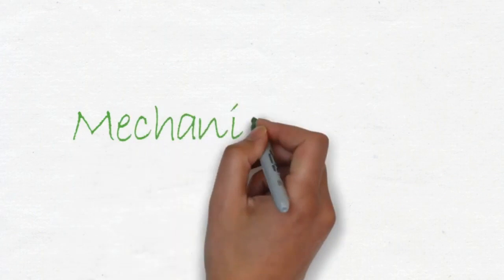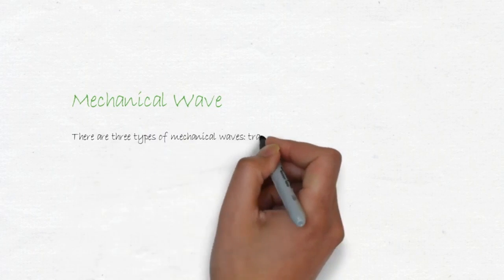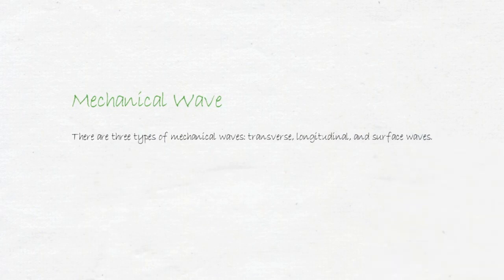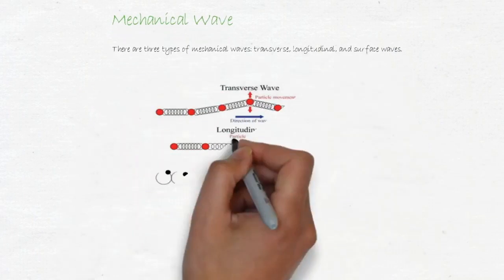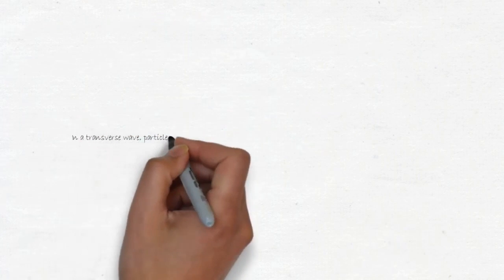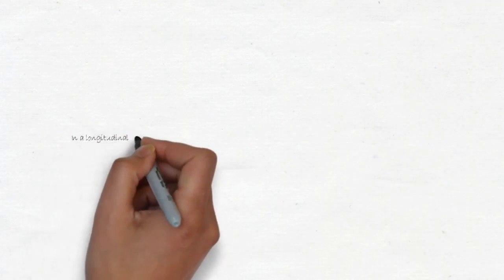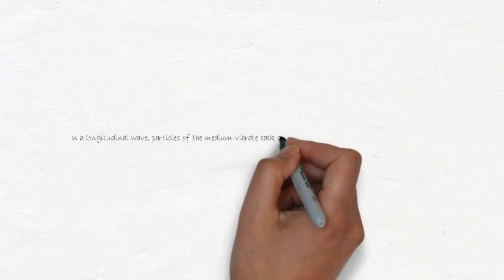Next, move on to the last chapter, that is wave. The next part is mechanical wave. There are three types of mechanical wave. The first is transverse wave, longitudinal wave, and surface wave. And we can look at the difference of the wave. The first is transverse wave. In a transverse wave, particle of the medium vibrate up and down perpendicular to the direction of the wave.